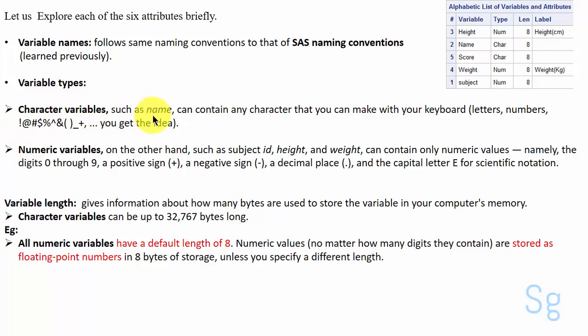Character variables, such as name, can contain any character that you can make with your keyboard like letters, numbers, and even symbols.